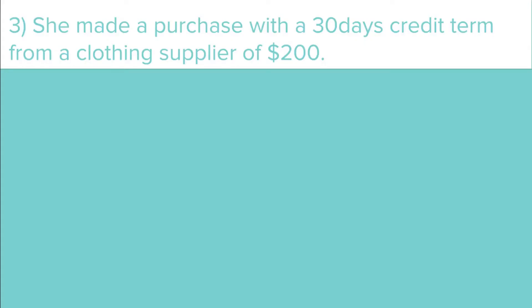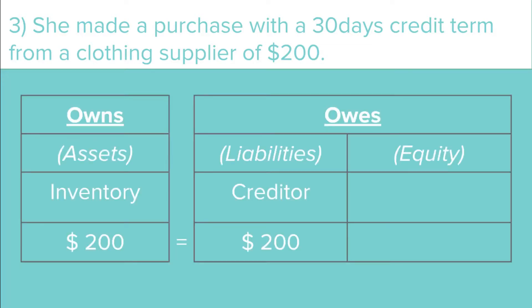Next, she made a purchase with a 30-day credit term from a clothing supplier for $200. This means she takes the clothes first and pays the supplier within 30 days. In the accounting equation, the amount the business owns increased by $200, while the amount the business owes also increased by $200, because it is now owing money to the creditor.